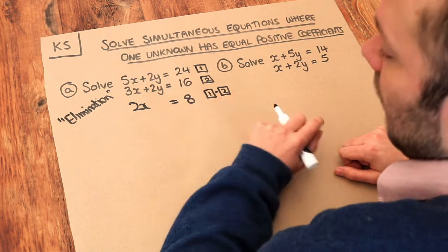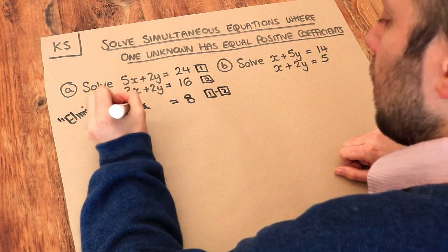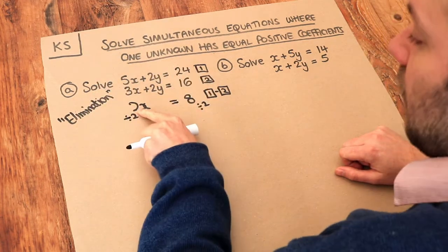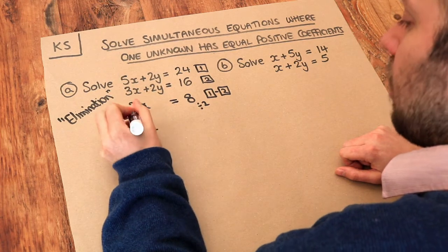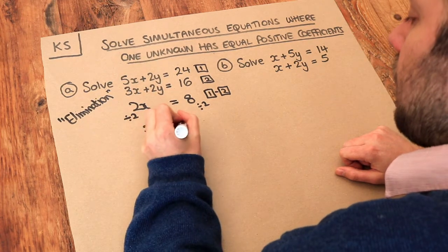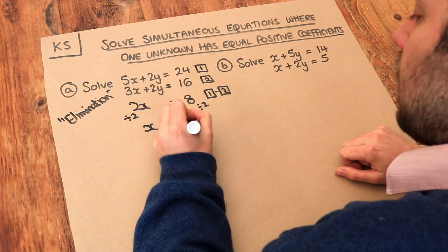Now if 2x is 8 what is x? Well we can just divide both sides of the equation by 2 to get rid of this 2 in front of the x. 2x divided by 2 is just x, and 8 divided by 2 is 4.